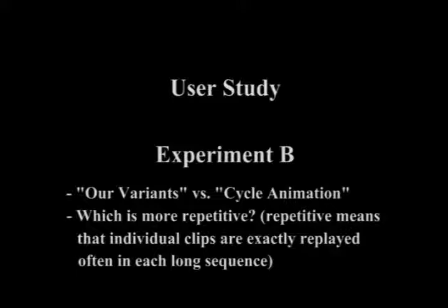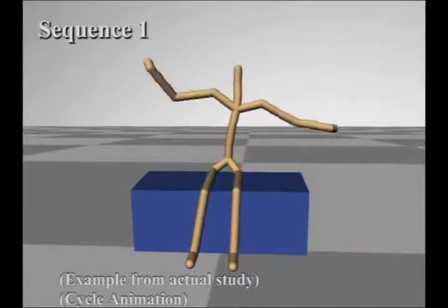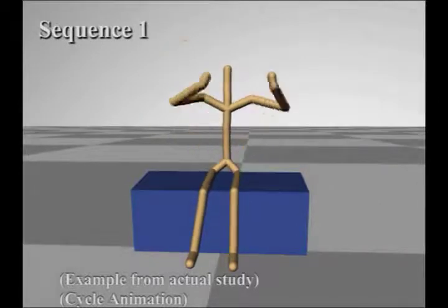For experiment B, the users watch a mixture of our variants and cycle animation sequences. A cycle animation is a long sequence where we repeatedly and randomly pick from the 4 input cheering motions.